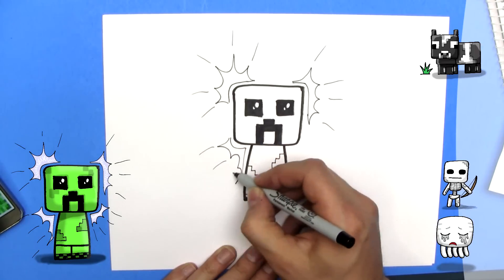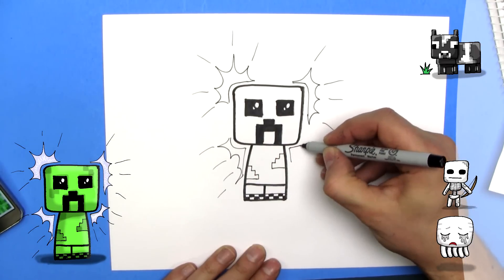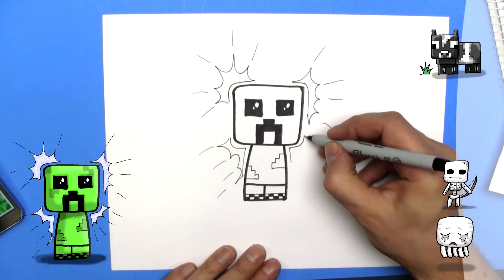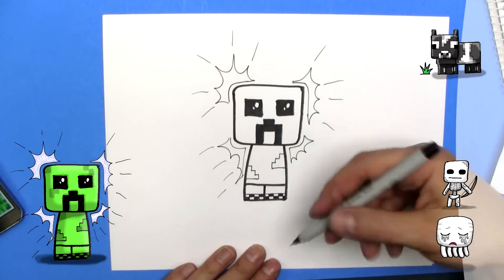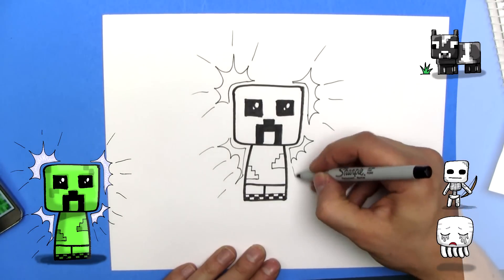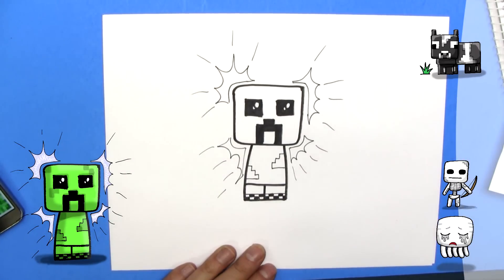So, the way we did that is we just draw a little line close to the creeper's body, but not quite, and then we just draw some bumps, some waves or bumps, and then you just draw some lines like that. There.